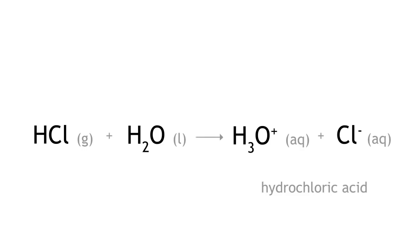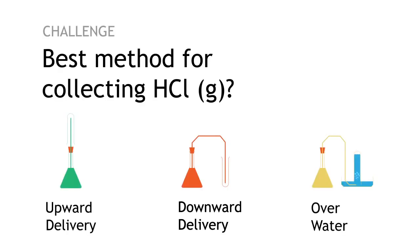Hydrogen chloride dissolves in water to produce hydrochloric acid. So collecting over water is not possible. Since it is more dense than air, it can be collected via downward delivery.